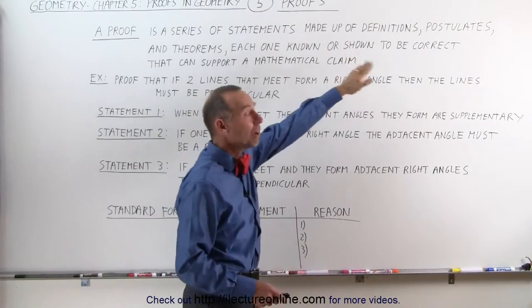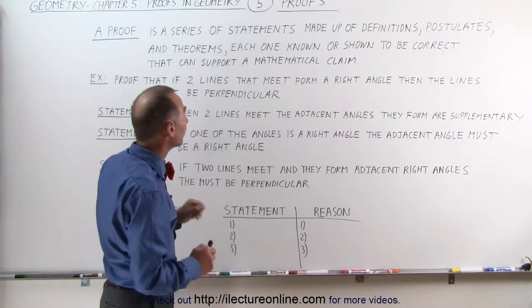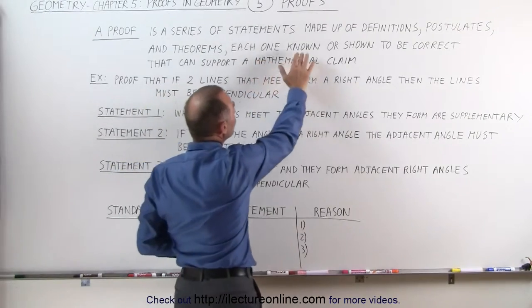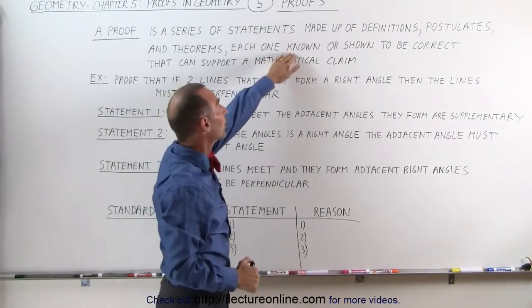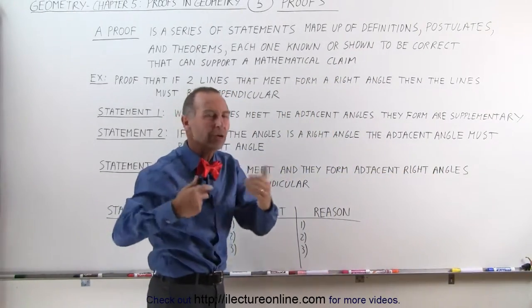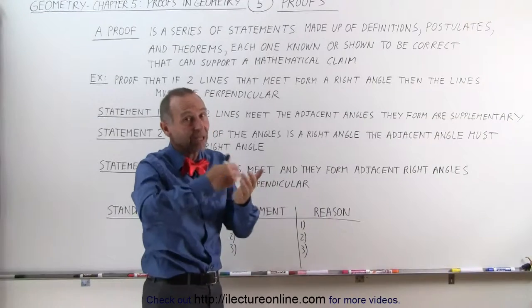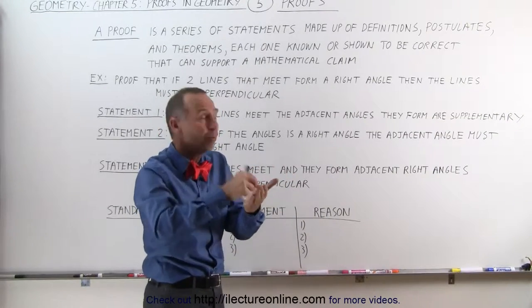Now, remember, definitions and postulates do not need to be proven. The theorems do need to be proven. Each one known or shown to be correct. So, we know them to be correct when they're definitions or postulates. We don't need to prove it. We know they're correct. We need to make the statement and explain why we can make the statement because of this definition or this postulate.